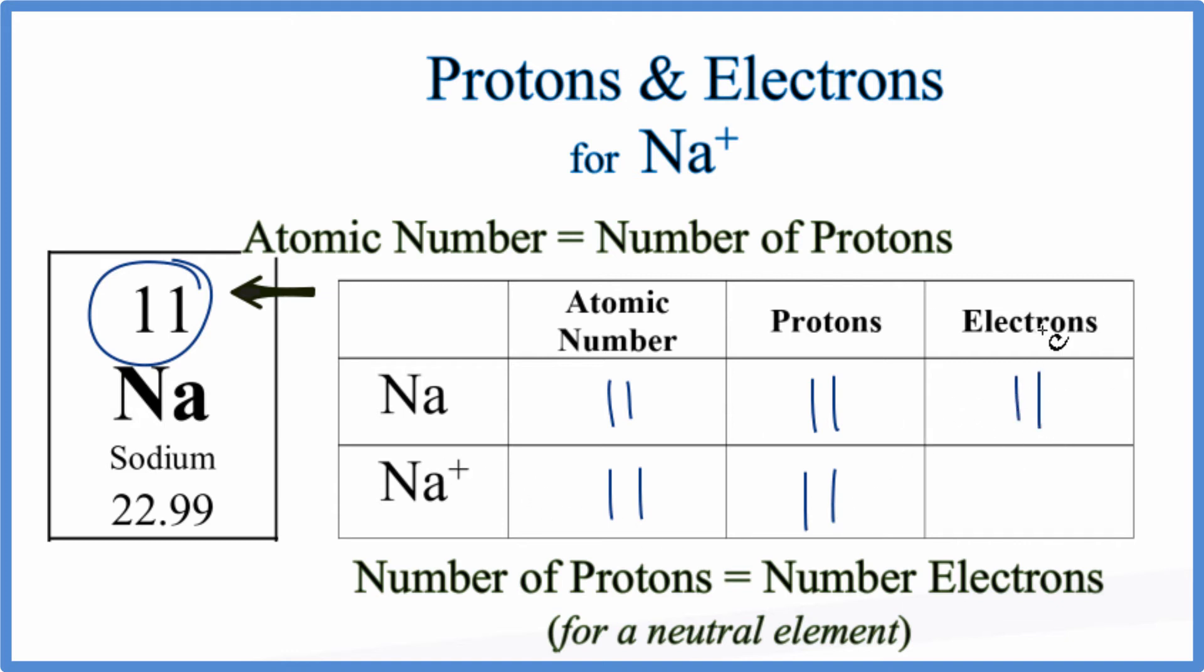For ions, electrons are what are different. So we have the Na plus, really it's Na1 plus, we just don't write the one. This plus means we've lost a negative charge. So when we lose a negative charge, we become more positive.